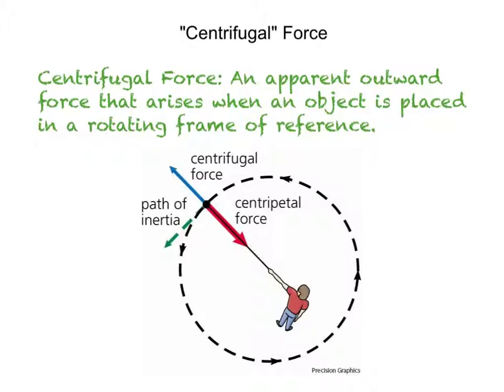Now, it's a common misconception to believe that a centrifugal force pulls outward on an object being whirled around. If the string, for example, in this example here, if the string holding this whirling object breaks, the object doesn't move radially outward but goes off in a straight line tangential path.